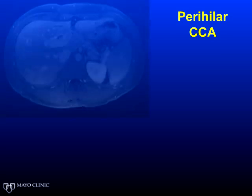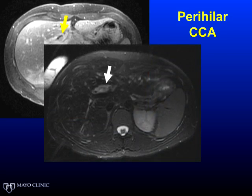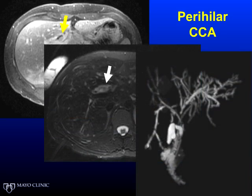Perihilar cholangiocarcinoma has often been misclassified as intrahepatic cholangiocarcinoma in many of the staging systems, and there's a recent paper in the Journal of Hepatology showing how common this is in the registry. The problem is perihilar cholangiocarcinoma will often invade hepatic parenchyma, but that does not make it intrahepatic disease. Here's a series of MRIs and MRCPs showing a left hepatic cholangiocarcinoma, even though it does involve hepatic parenchyma.